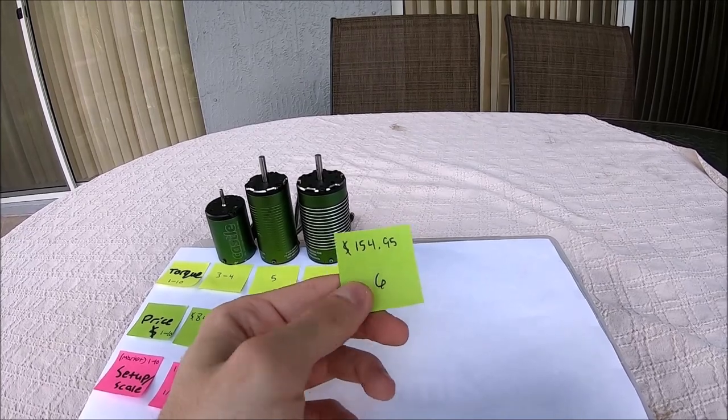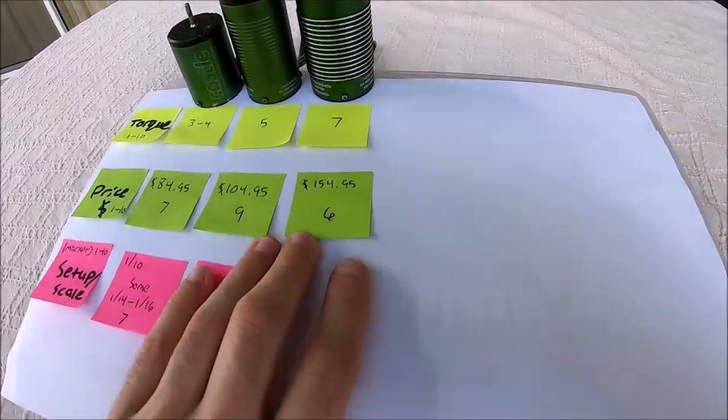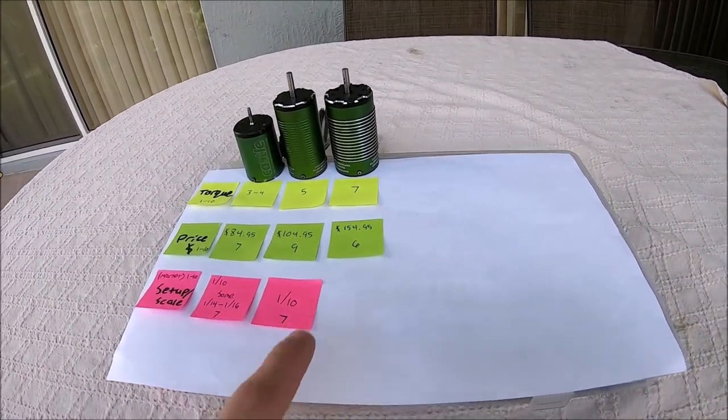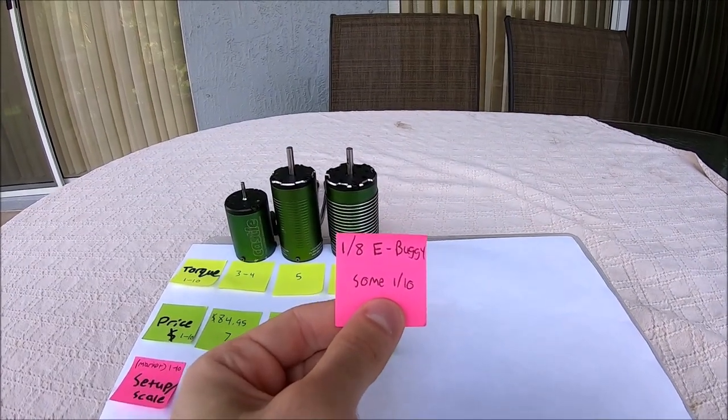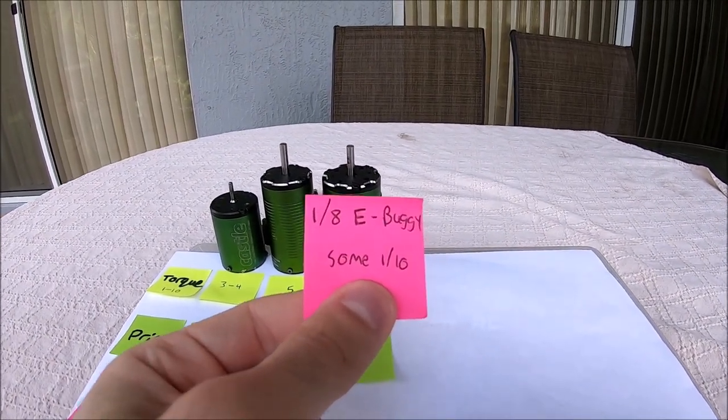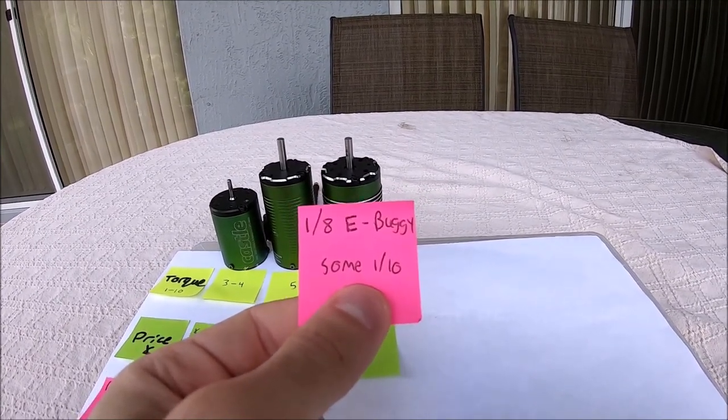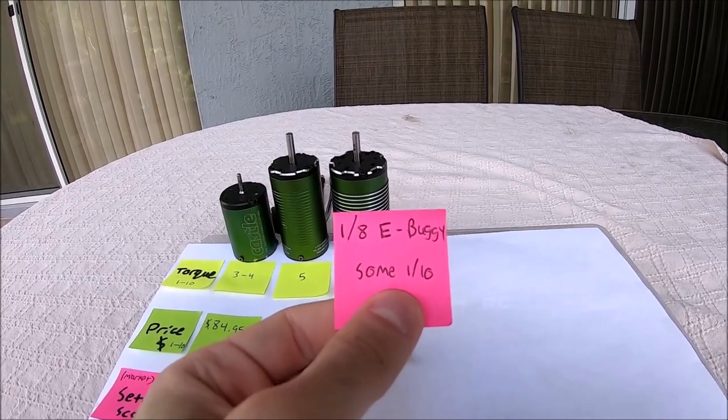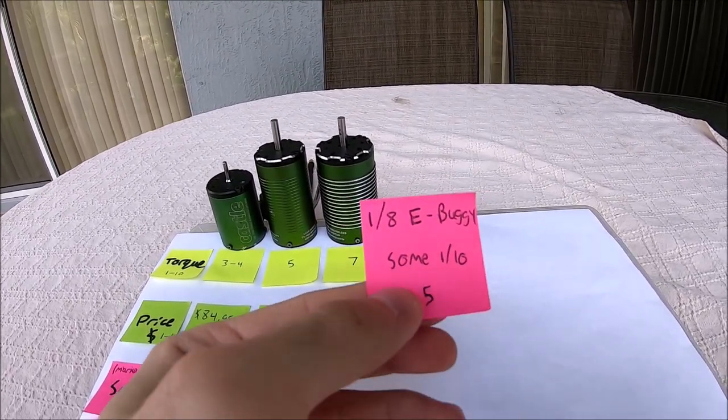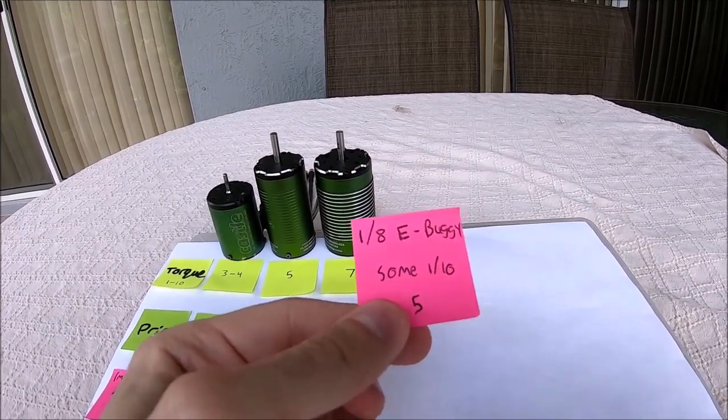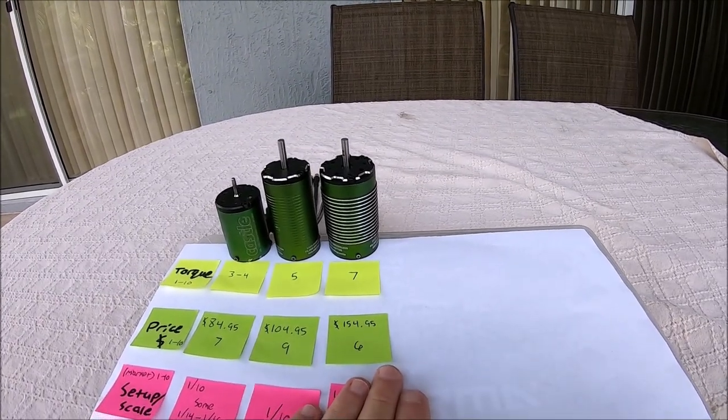As we get higher in power output, we get higher in price. Coming in at $154.95 USD, I'm going to give the 1512 a 6. Now the reason why this rating is kind of low is because it's going to be really explained in this one. Setup and scales that you would be putting the 1512 1800 KV in will be the 1/8 scale e-buggy or e-truggy and some 1/10 scales.